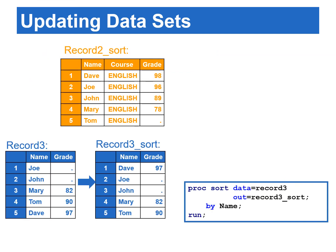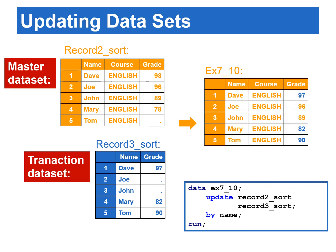For example, some of the test scores in the record two sort data set need to be modified. In this program, the transaction data set record three sort contains newly collected scores stored in the grade variable. The program updates record two sort with values from grade in record three sort. Notice that the values for grade for Joe and John are missing in record three sort. Thus, in the final updated data set, the values for Joe and John are from the master data set, which is record two sort.